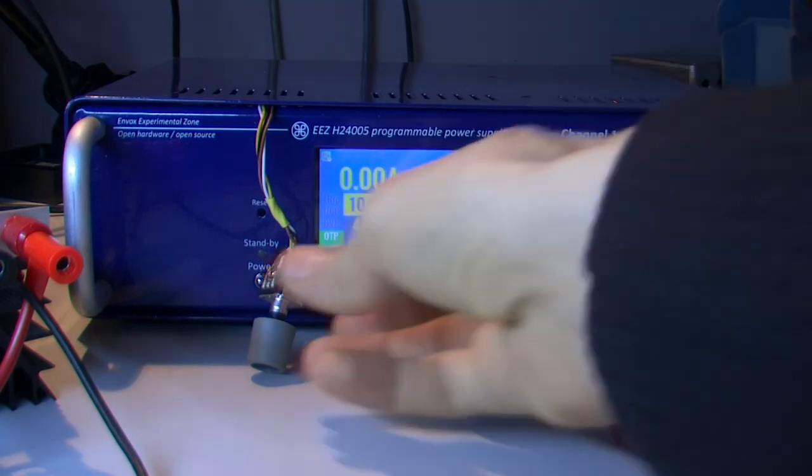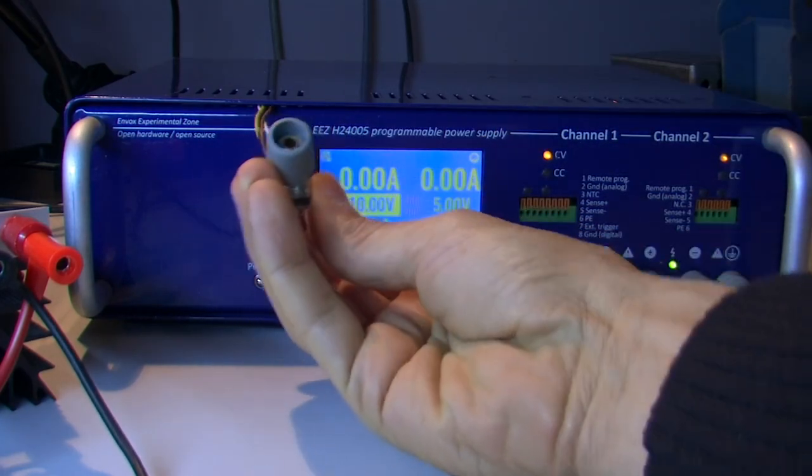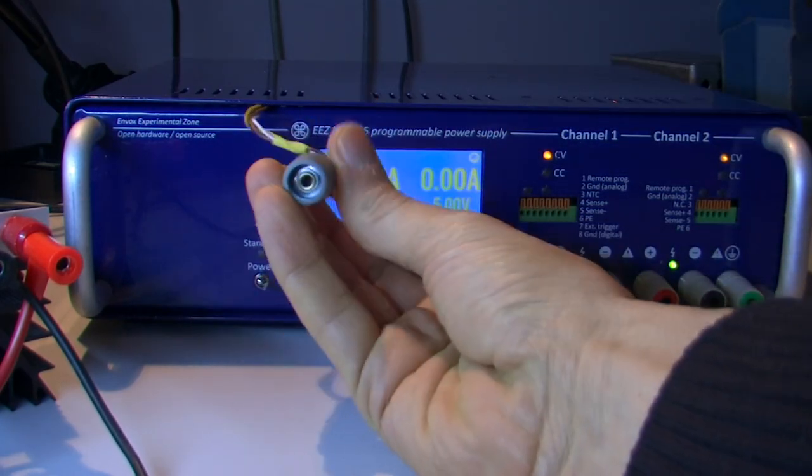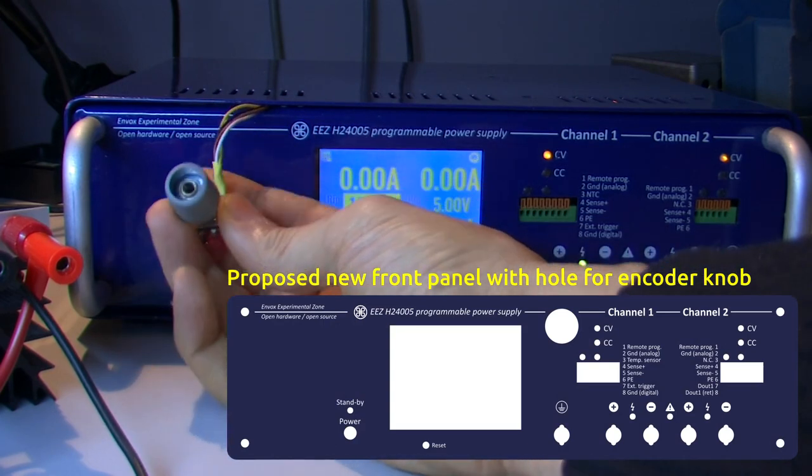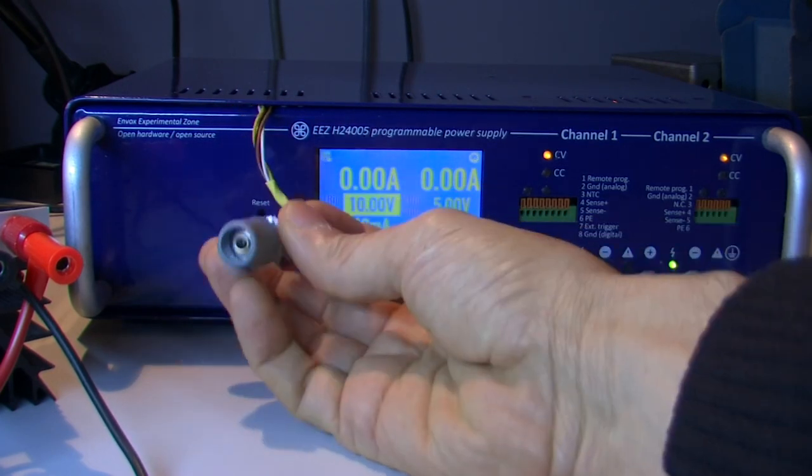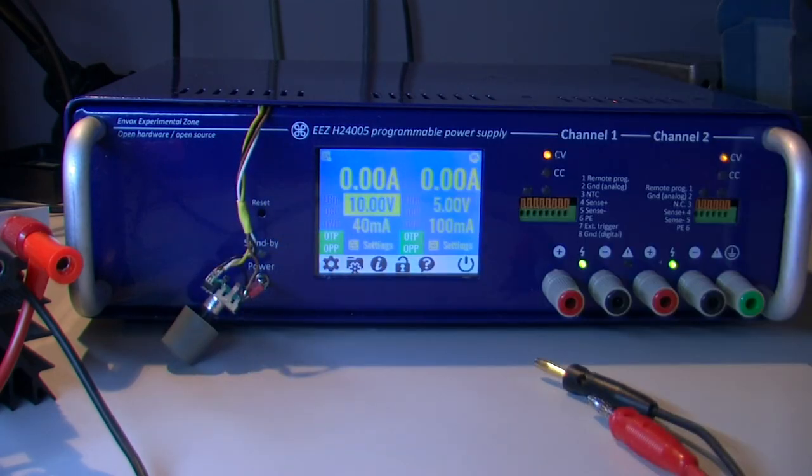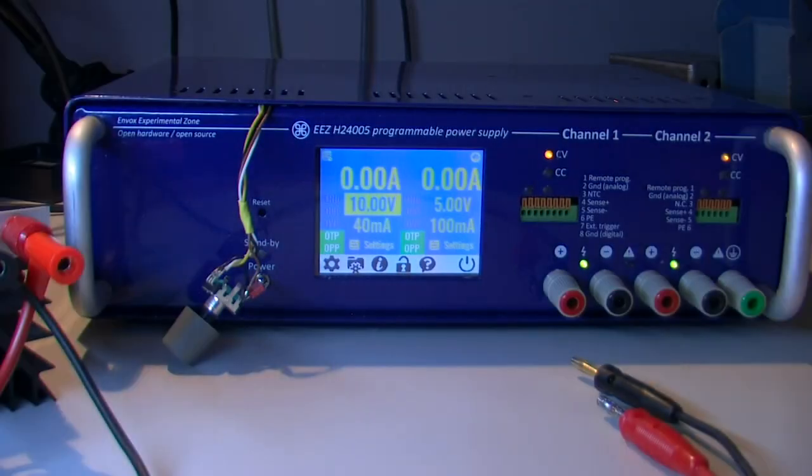I use that connector to plug in the encoder. On this enclosure there is no hole for a knob, so I will use this as a temporary solution. When the encoder is enabled in firmware, it will work together with existing touchscreen functionality. The primary goal is to use it to change numeric values.